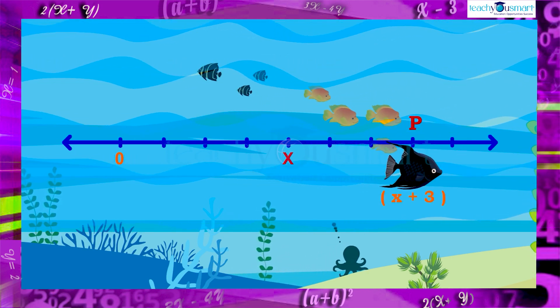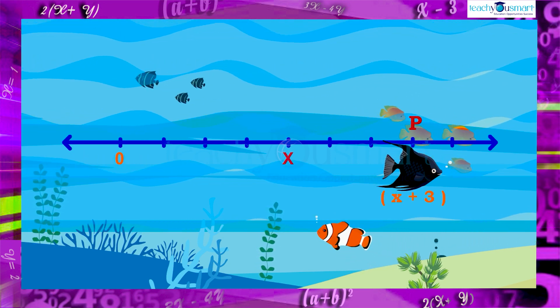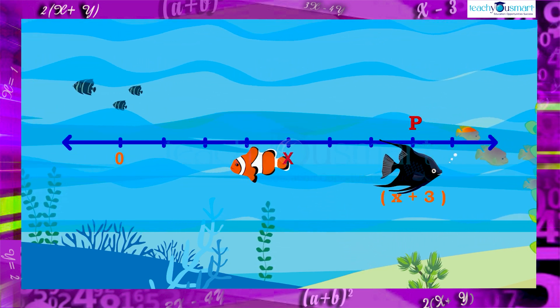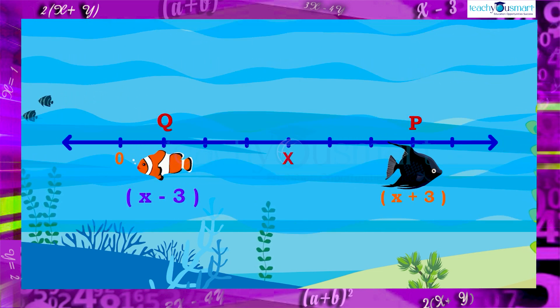Mark it as p. The position of x minus three will be three units left of x. Mark it as q. That is p represents the position of the expression x plus three and q represents the positions of the expression x minus three.